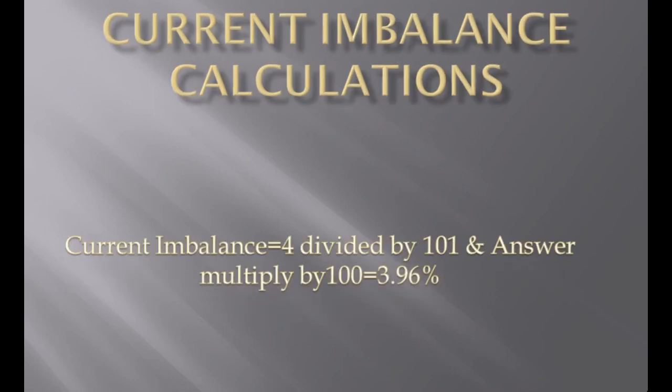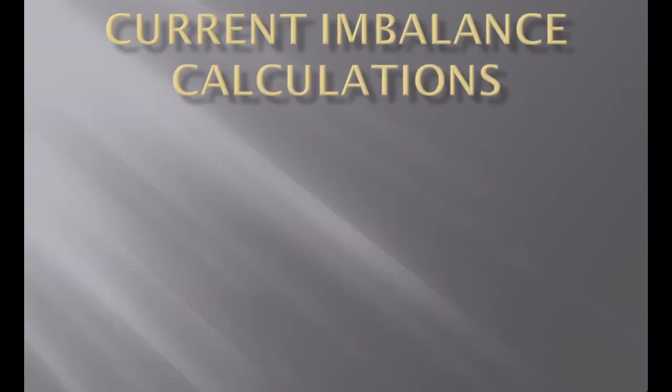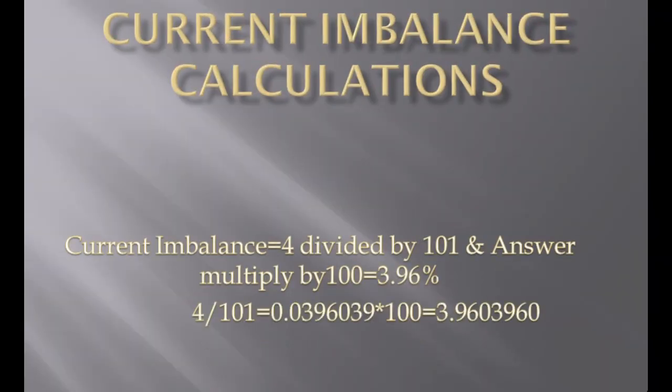Multiply the result by 100 to calculate the percentage. In this example, the current imbalance is 3.96%. Please note an acceptable current imbalance value is 1%.